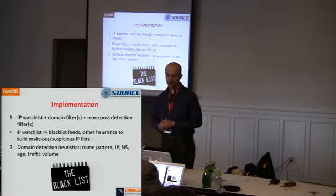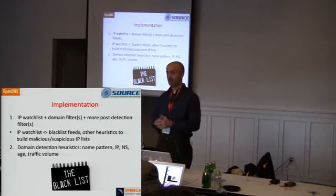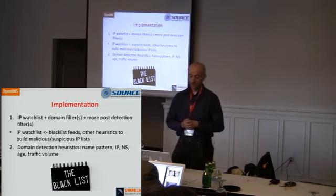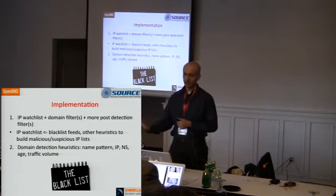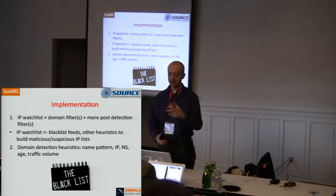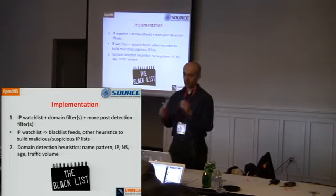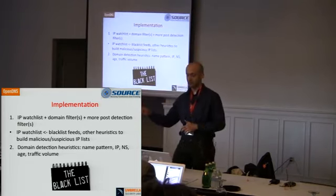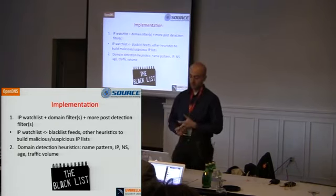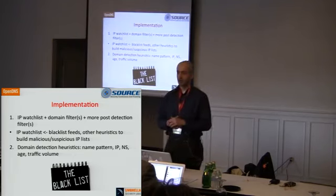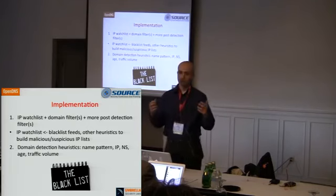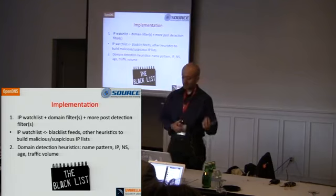The implementation is pretty simple but efficient and effective. One approach is to start with an IP watch list and apply a domain filter — focusing on a few IPs and seeing all the domains that map to them, then filtering out what you want. You can also do post-detection filters to remove false positives and noise. The IP watch list can come from private or public blacklist feeds for IPs, or other heuristics to identify IPs you want to focus on.